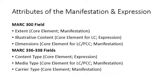Physical Description contains attributes related to the manifestation and the expression. The first three of these elements — extent, illustrative content, and dimensions — are elements that have always been included in bibliographic descriptions.